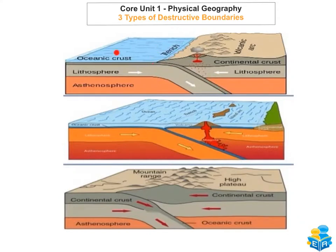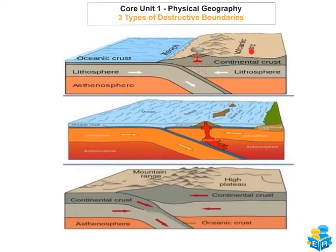The reason why the oceanic crust always subducts and goes beneath the continental crust is because it's heavier — it's more dense. The oceanic crust is usually made up of heavier, older rock such as basalt, whereas the continental crust is usually made up of lighter, less dense rock such as granite.